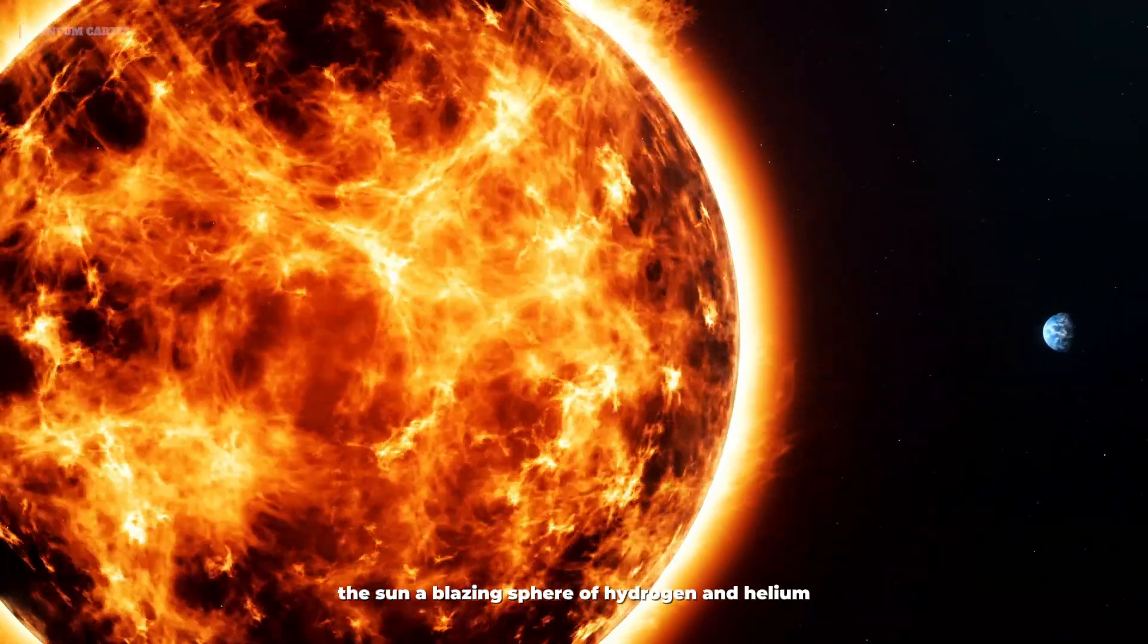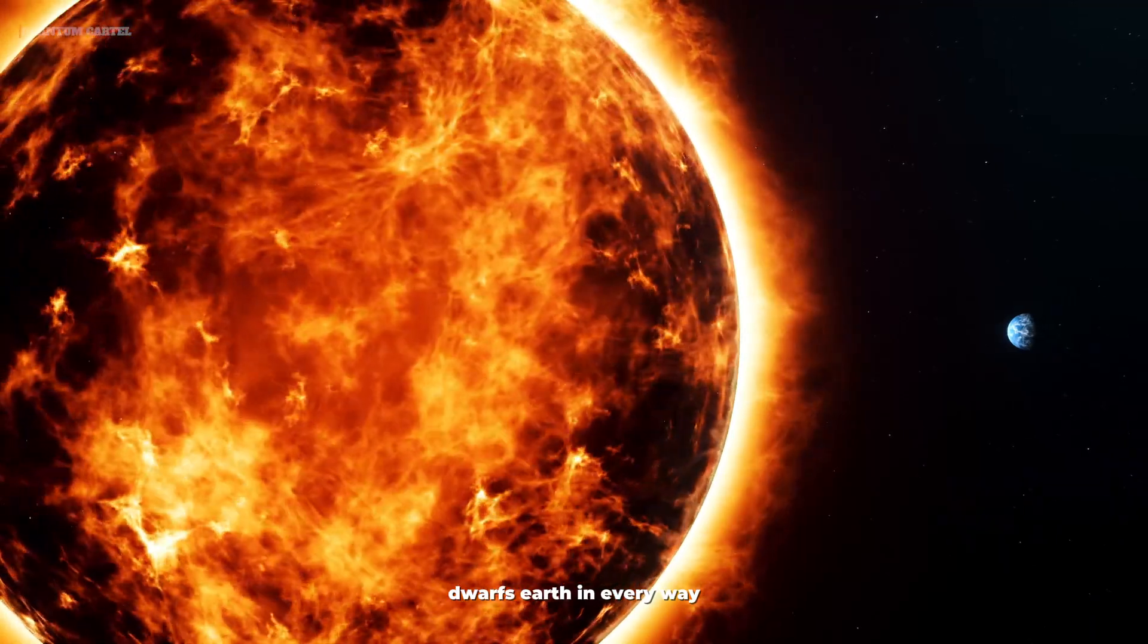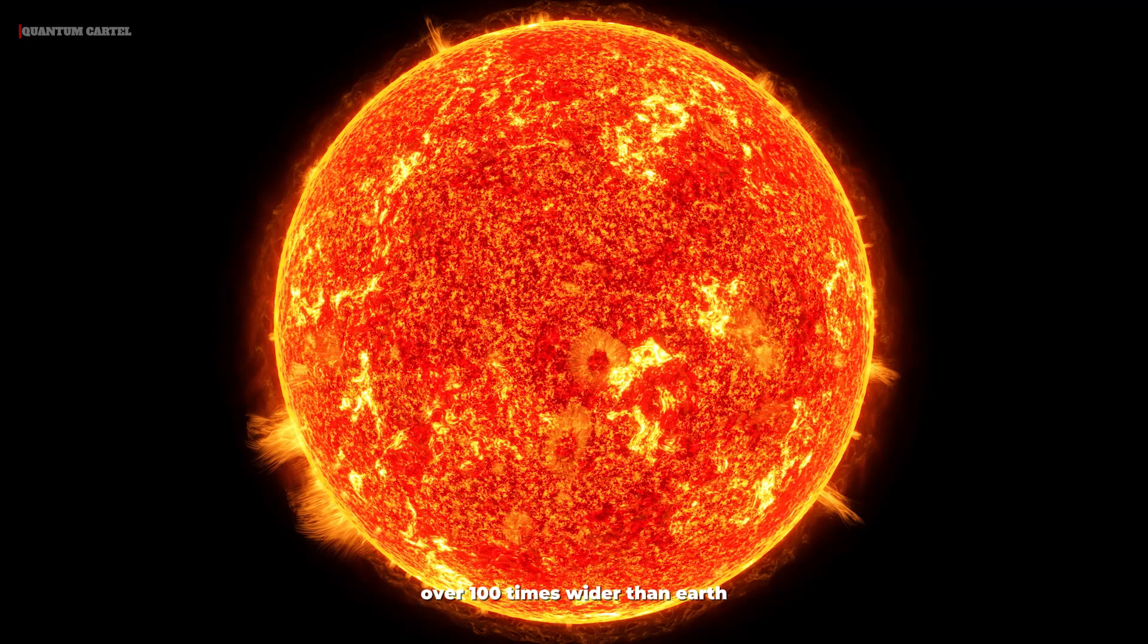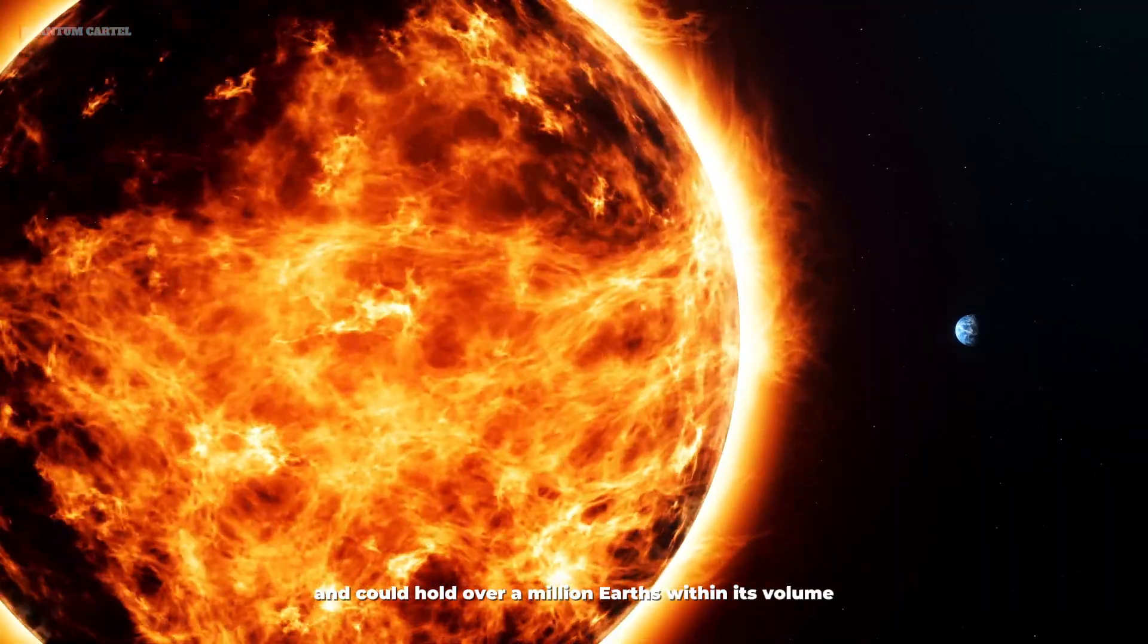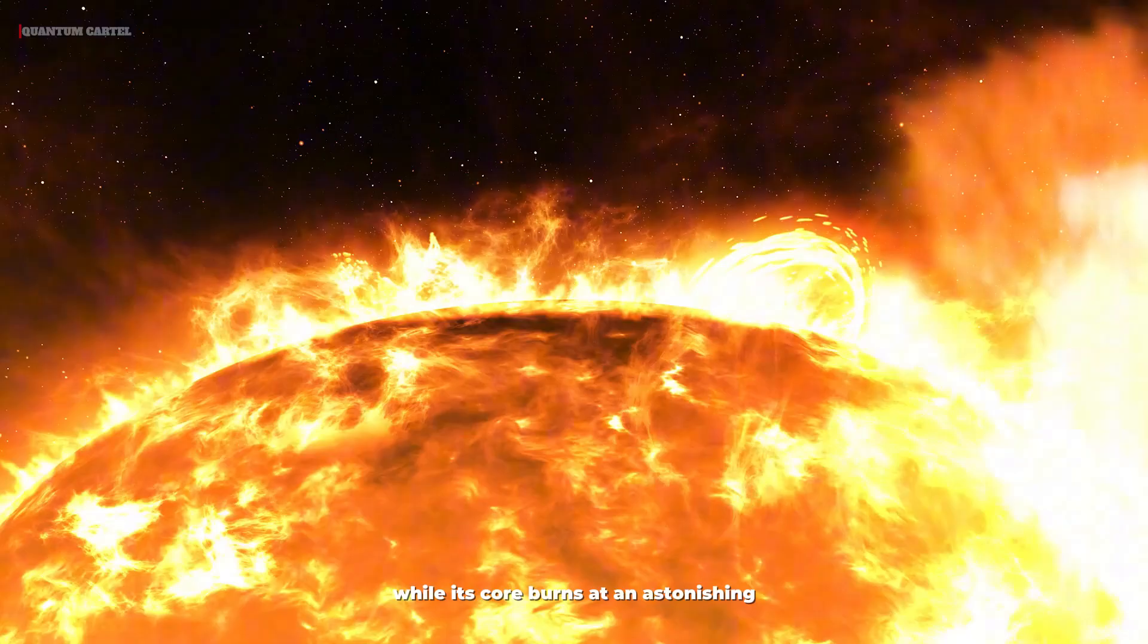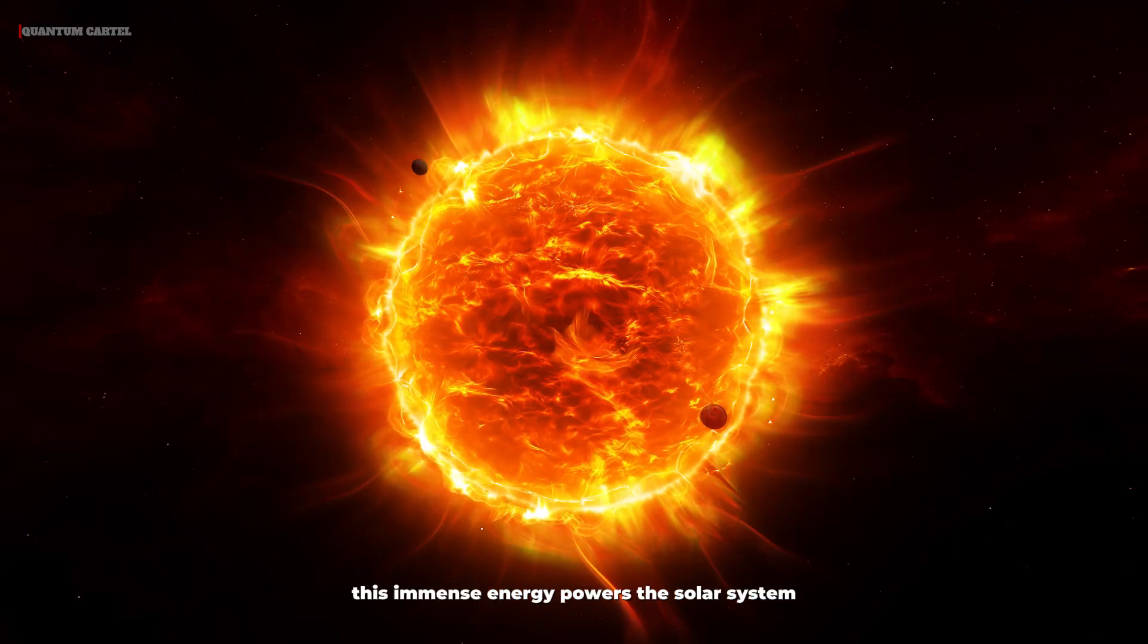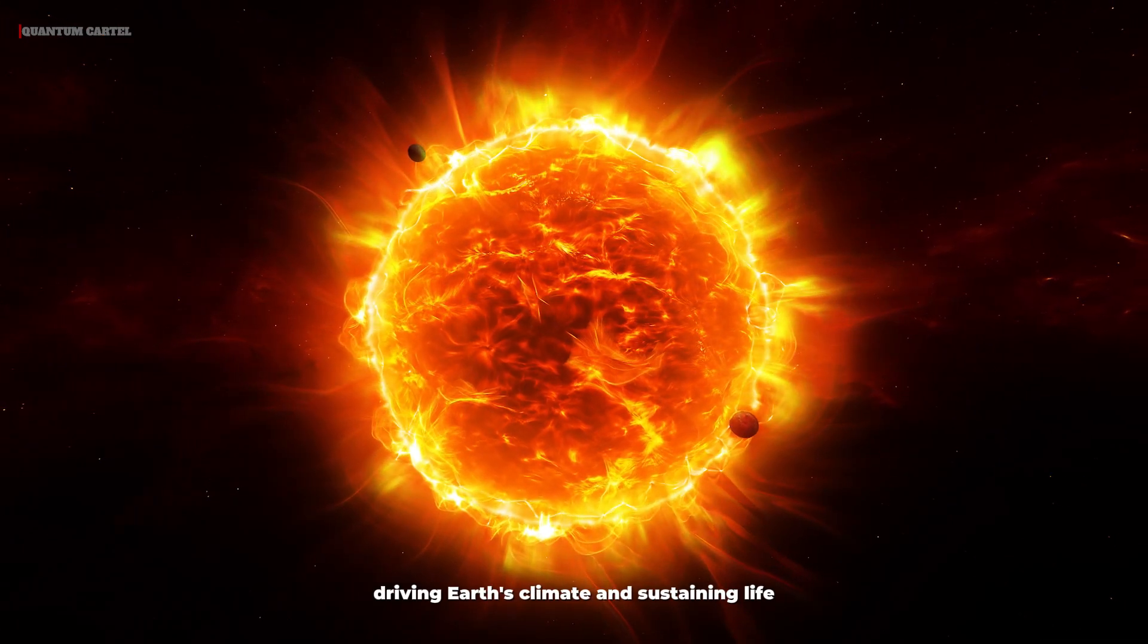The Sun, a blazing sphere of hydrogen and helium, dwarfs Earth in every way. It's about 864,000 miles in diameter, over 100 times wider than Earth, and could hold over a million Earths within its volume. Its surface temperature reaches approximately 5,500 degrees Celsius, while its core burns at an astonishing 15 million degrees Celsius. This immense energy powers the solar system, driving Earth's climate and sustaining life.